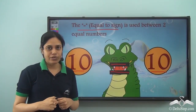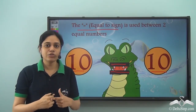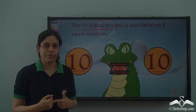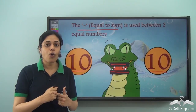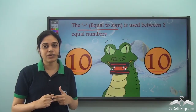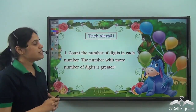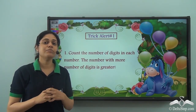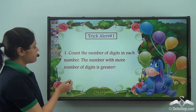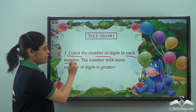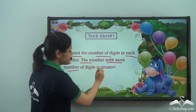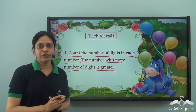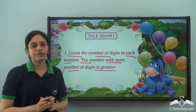When we compare two numbers we can always count the numbers to find which of the two is the bigger number. But what if we have a huge number — a three-digit number? Will you count all the numbers till the three-digit number? So let's learn some tricks to easily find out which of the two given numbers is greater. The first trick is: count the number of digits in each number. The number with more digits is greater.